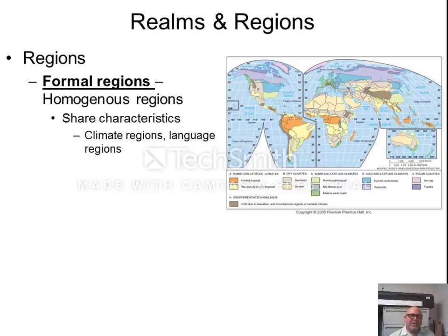We can subdivide regions into two types: formal regions and functional regions. Formal regions are what we usually think of for a region — areas that share some characteristics.